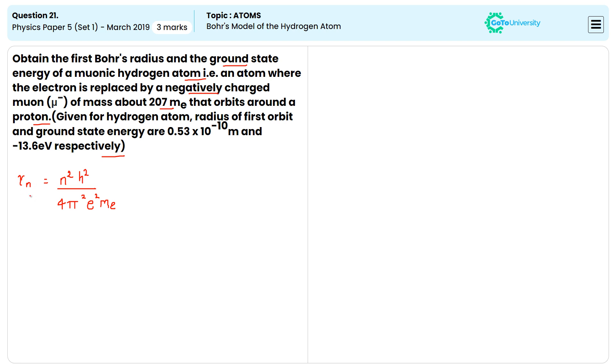If it is the first orbit, then we can write it as r1 is inversely proportional to mE.